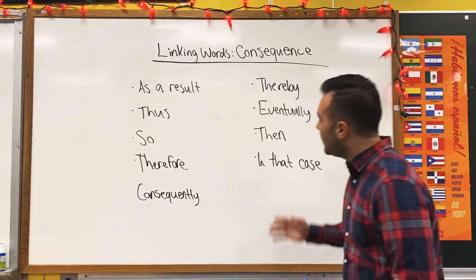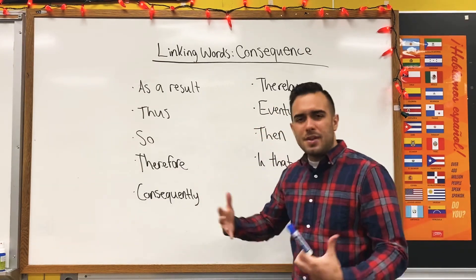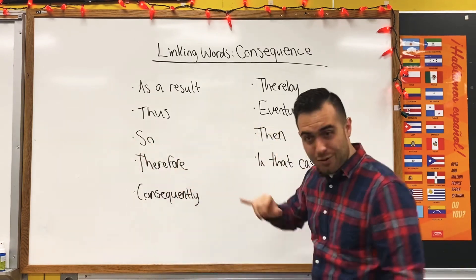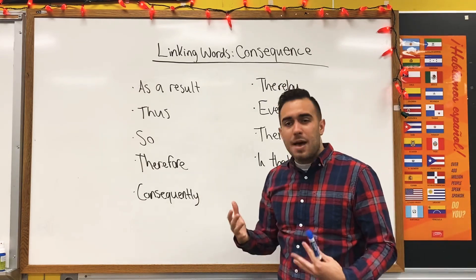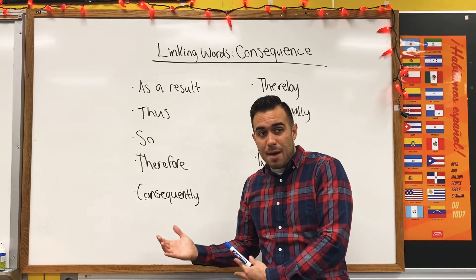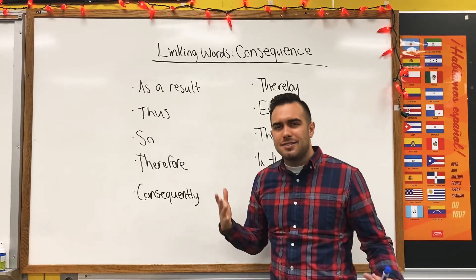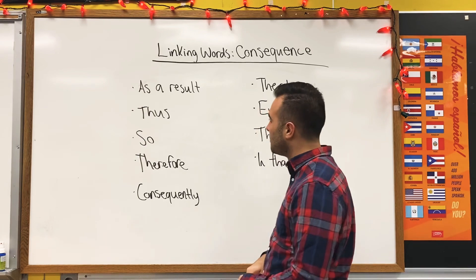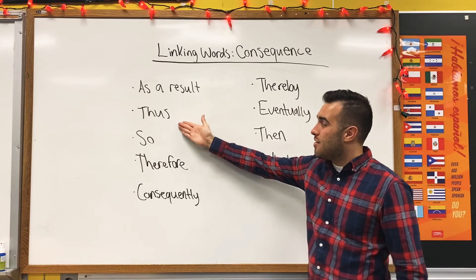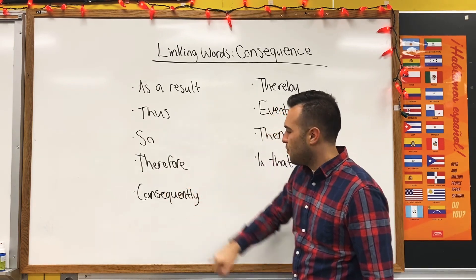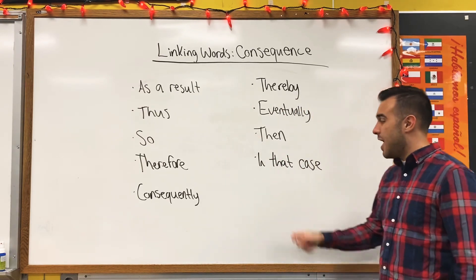Each of these words always represents cause and effect. As a result, something happened. Therefore, you do something else. As a consequence, something happens because of a prior action. So the linking words for consequence are: as a result, thus, so, therefore, consequently, thereby, eventually, then, and in that case.